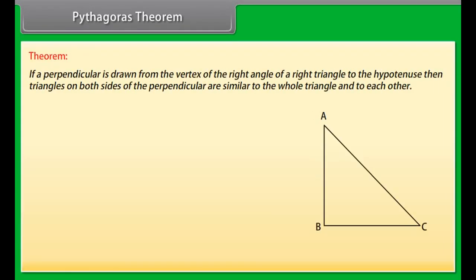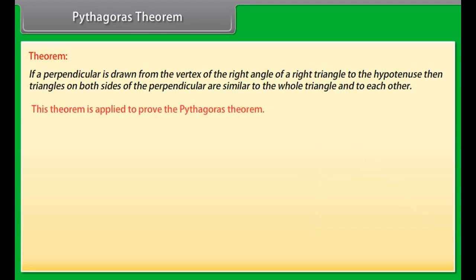Pythagoras theorem: If a perpendicular is drawn from the vertex of the right angle of a right triangle to the hypotenuse, then the triangles on both sides of the perpendicular are similar to the whole triangle and to each other. This theorem is applied to prove the Pythagoras theorem.